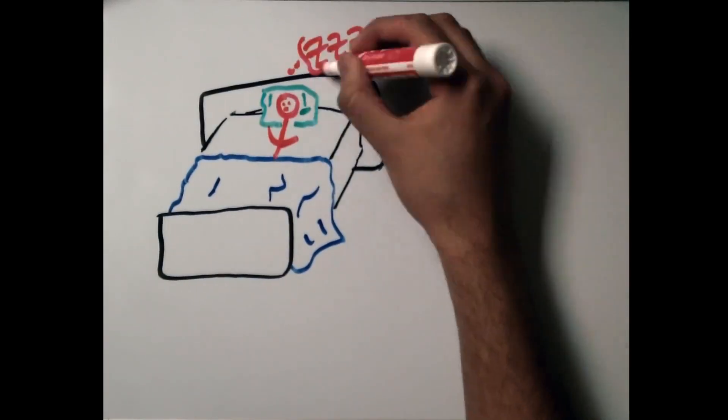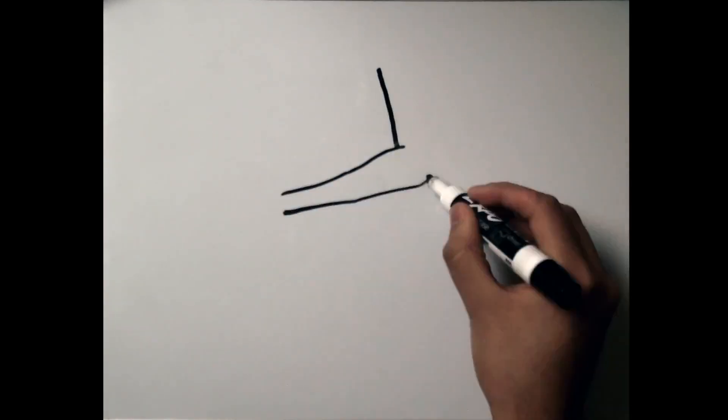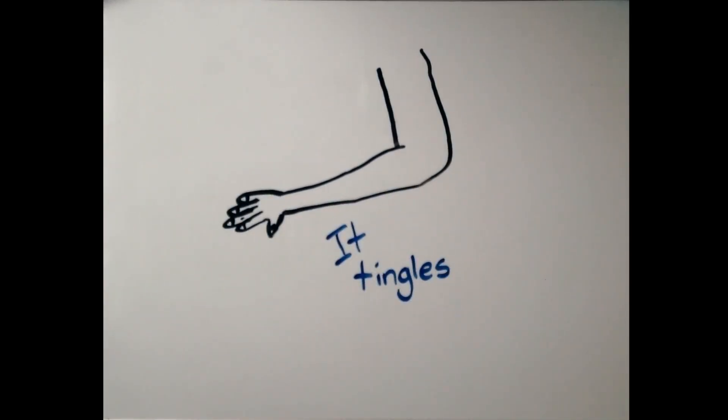So, you've been sleeping or sitting down for a while, and you start to feel something strange. Your leg or your arm is asleep, and it tingles. Why does this happen? And is it dangerous?